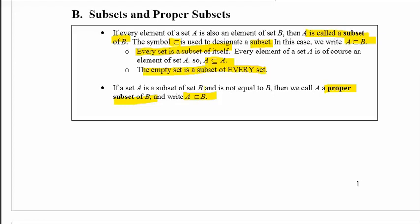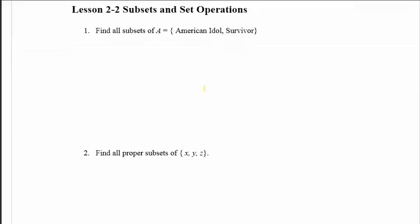So now we're going to practice identifying subsets and proper subsets. First, let's find all subsets of A where it contains the elements of the TV shows American Idol and Survivor. So the first subset would be the same one that we see. Every set is a subset of itself.